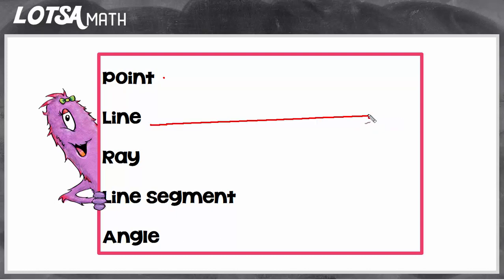Since a line never ends, we have to show in some way that it's a line because we can't keep drawing forever. So what we do is put an arrow at the end of each side to show that it's a line. The arrows indicate that it goes on forever.